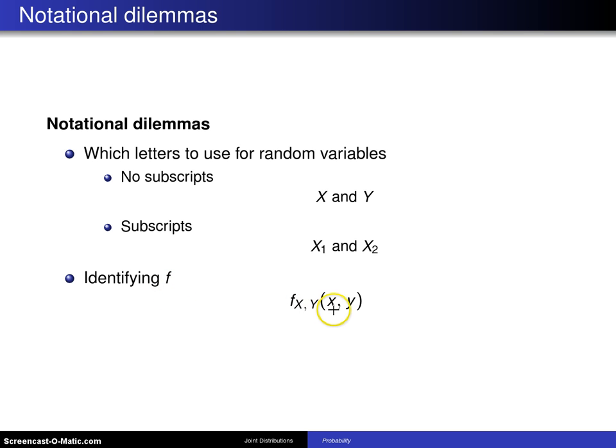So if there's ever any confusion, you will see it written this way: little f of x, y, with indices x and y. That is to pin down which random variables are under consideration for a particular probability mass function or probability density function.